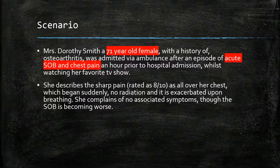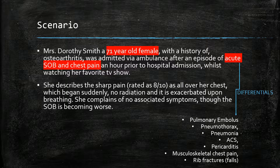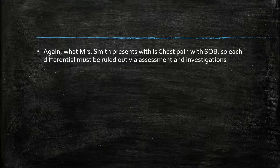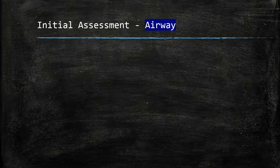These causes include pulmonary embolism, pneumothorax, pneumonia, acute coronary syndrome, pericarditis, musculoskeletal pain, and rib fractures. The idea here is to use clinical assessment and investigation to rule out the causes of these symptoms, beginning as always with assessing the patency of the airway.